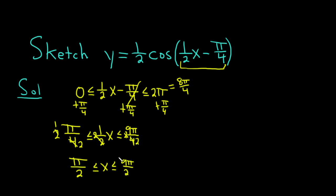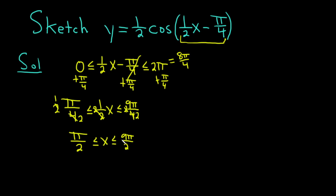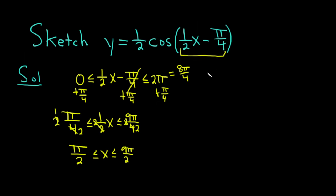We're going to take this interval, subdivide it into equal parts, plug the numbers into our function, and connect the dots. We're not using shifting, shrinking, or stretching. This is a simple computational approach — set the argument between 0 and 2π, solve for x, subdivide the interval, and plot points. This method always works for sine and cosine functions.